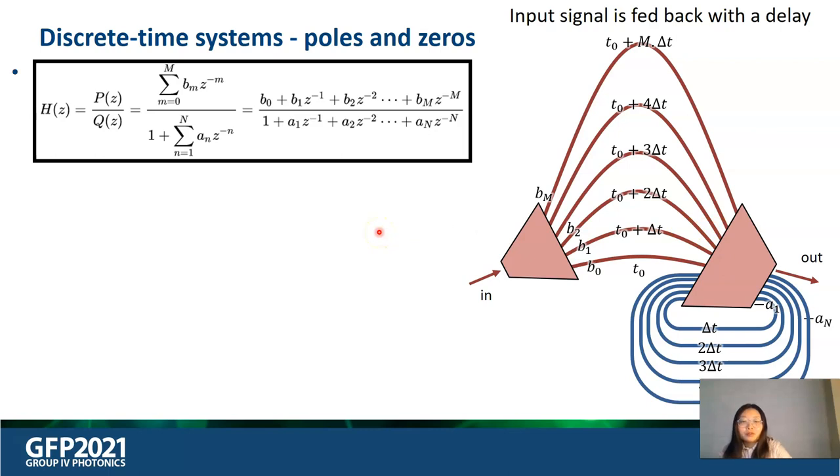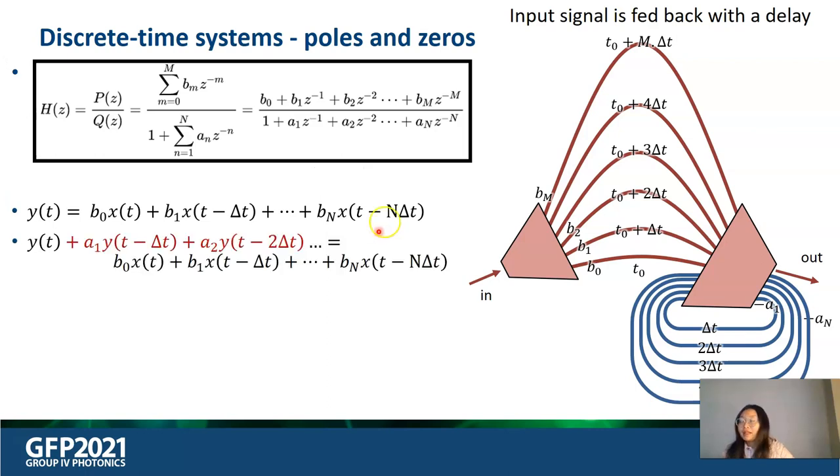The time domain response is written as the following. The output Y(t) is the function of the input X(t). If we describe the transmission in the Z domain for such time domain response, the feedforward delay lines could be expressed as P(z) and B are the coefficients of the splitting coefficients. This is how the AWG works.